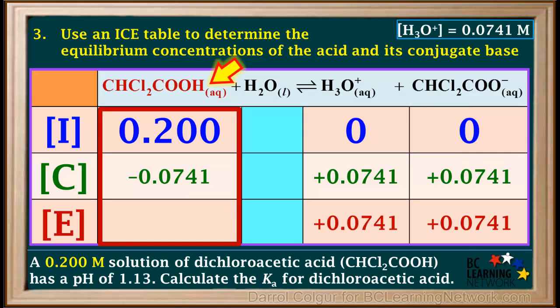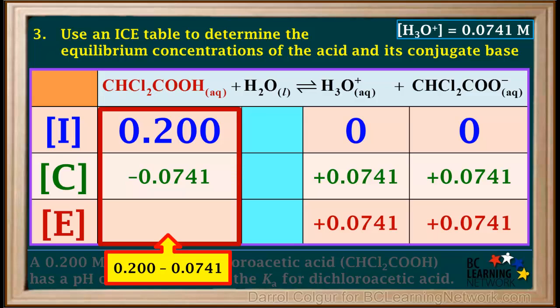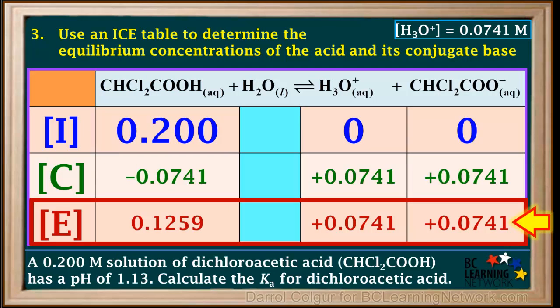Now for dichloroacetic acid on the left: because it is a reactant, its concentration goes down as the reaction moves to the right. With a coefficient of 1, it decreases by 0.0741 molar. It started at 0.200 molar and went down by 0.0741 molar, so its equilibrium concentration is 0.200 minus 0.0741, which comes out to 0.1259 molar. We now have the equilibrium concentrations of all three species.